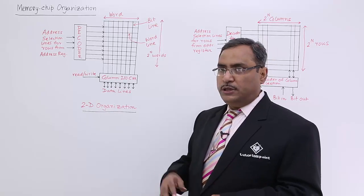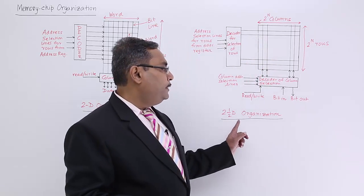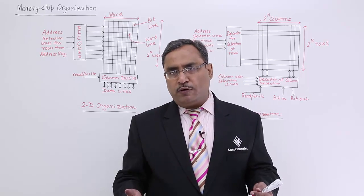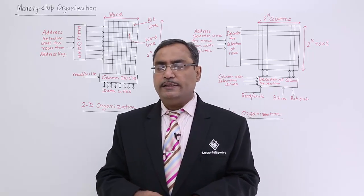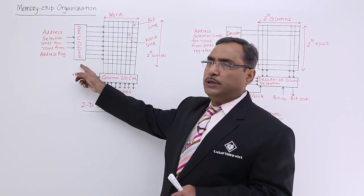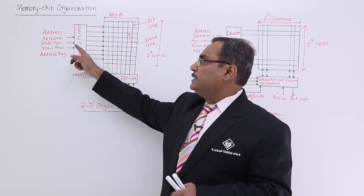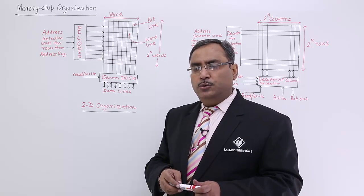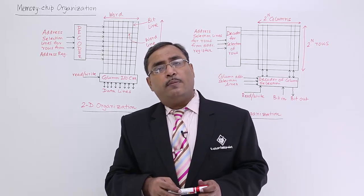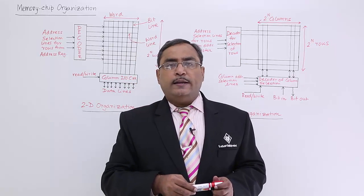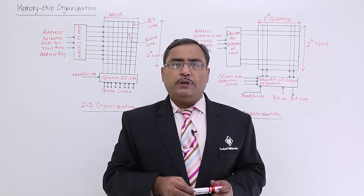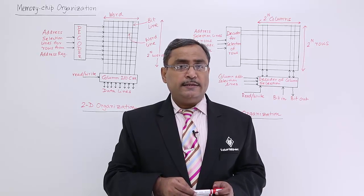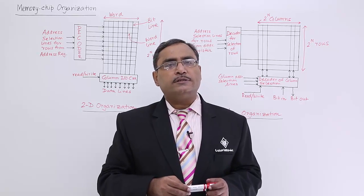This is my 2D organization and this one is my 2.5D organization. I shall discuss advantages, disadvantages, and where to use 2D versus 2.5D. In 2D, we have a decoder — let us suppose it is having 3 bits as input. A decoder is a combinational circuit which has n input lines and 2 to the power of n output lines, and depending upon the combination of the input, one of the output lines will be selected at a time.